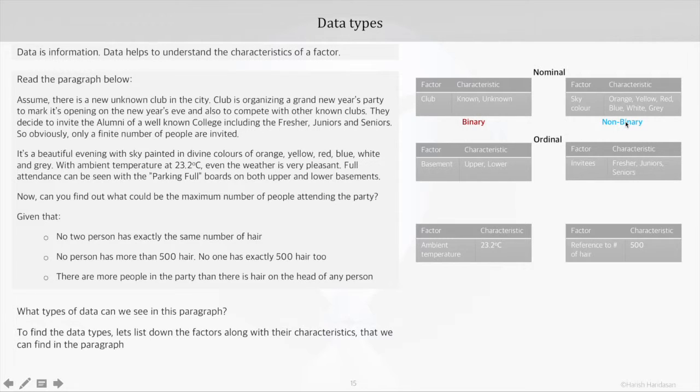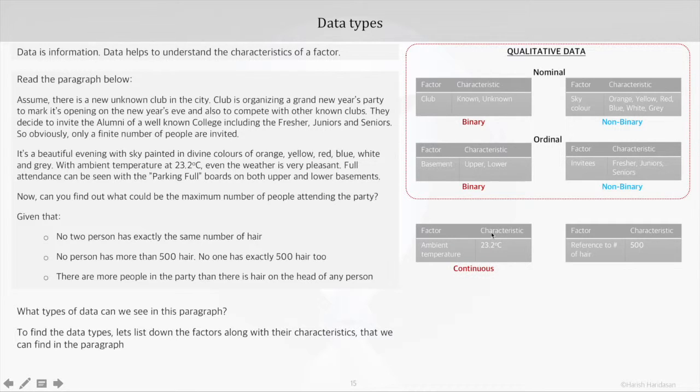A quality-based categorization that uses some kind of a ranking is called ordinal data, which also can be binary and non-binary. This set of data types are categorical and they are grouped under qualitative data.